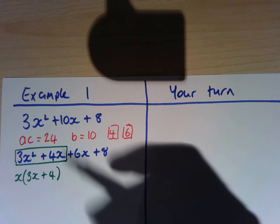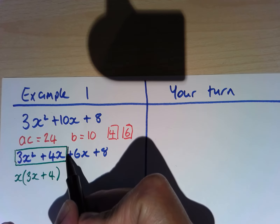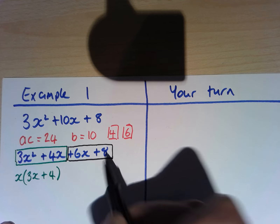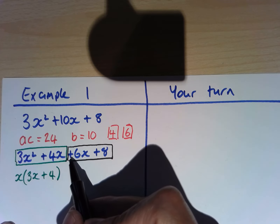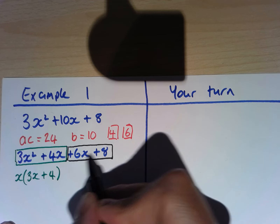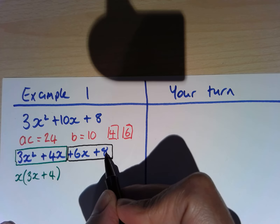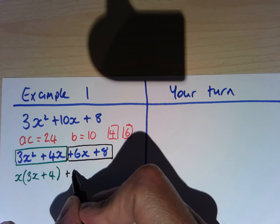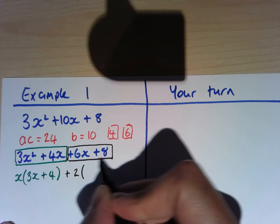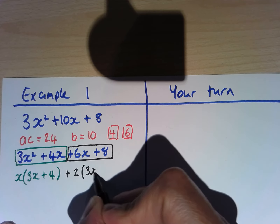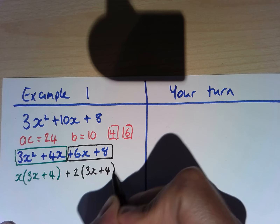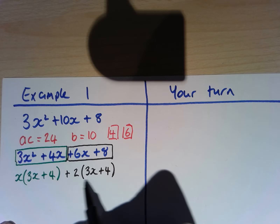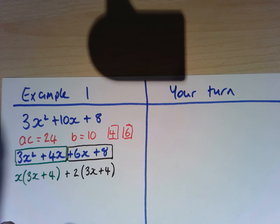Now I'm going to factorise this part here: plus 6x plus 8. The common factor is going to be 2, so I'm going to have plus 2, and inside my brackets I'm going to have 3x plus 4. So 2 times 3x gives us 6x, and positive 2 times positive 4 gives us the plus 8.